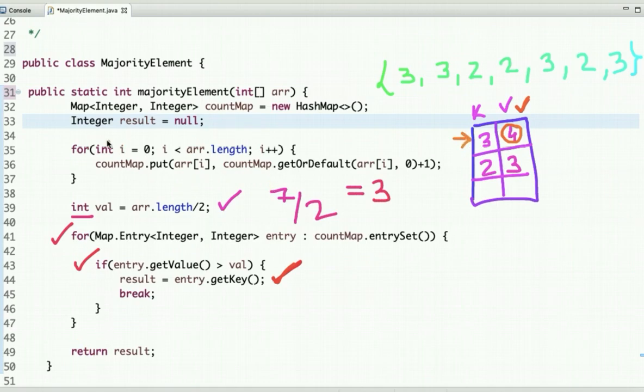Let's dry run this code. First I have declared a map—Map of Integer and Integer. The key is integer and its value is also an integer. Then we traverse the array and create a map in which the key is the number and the value is its count.